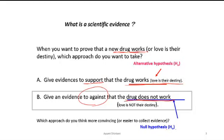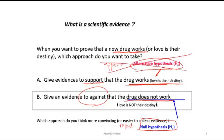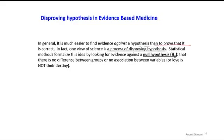When we provide scientific evidence, instead of trying to prove the drug works, we try to disprove — reject the null hypothesis that says the drug does not work. We try to reject the null hypothesis instead of proving the alternative hypothesis. In general, it's much easier to find evidence against a hypothesis rather than to prove the hypothesis is correct. In fact, one view of science is a process of disproving hypotheses. Statistical methods formalize this idea by looking for evidence against the null hypothesis.